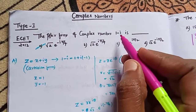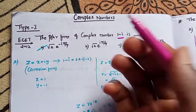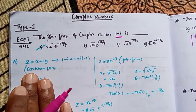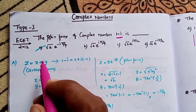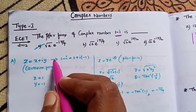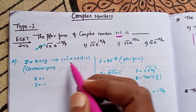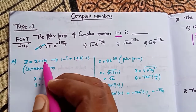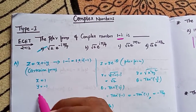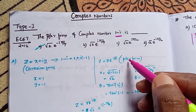Here we will learn: 1 minus i. We will convert this to polar form. The Cartesian form is x plus i·y. So we can see that 1 plus i into minus 1, meaning x is 1 and y is minus 1.